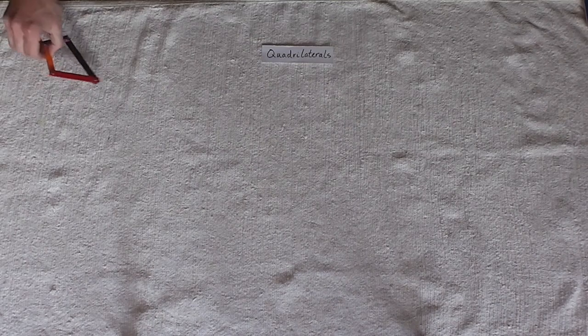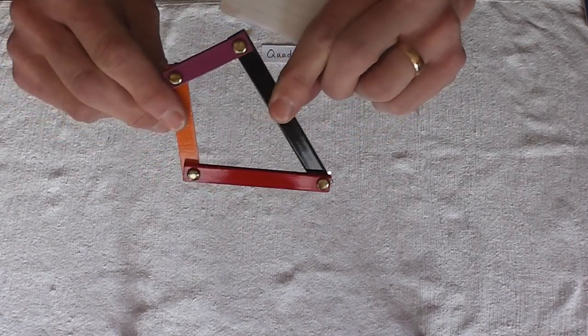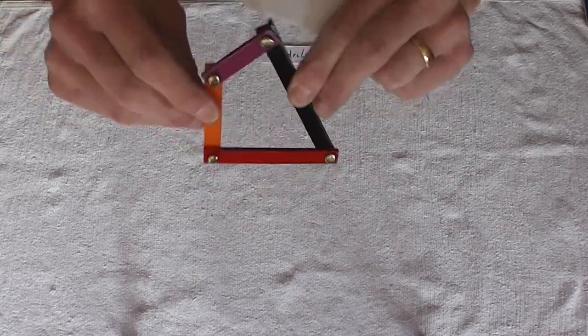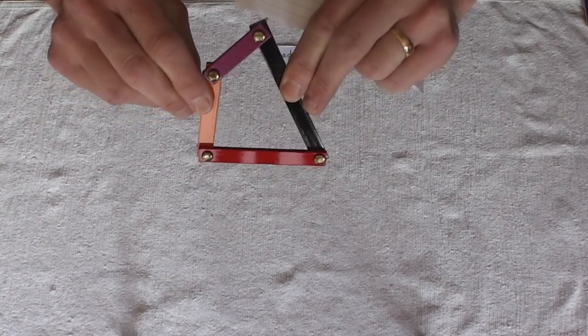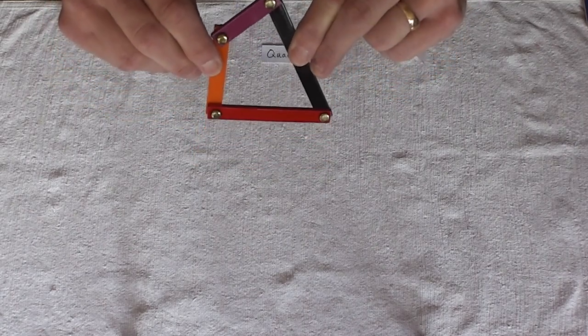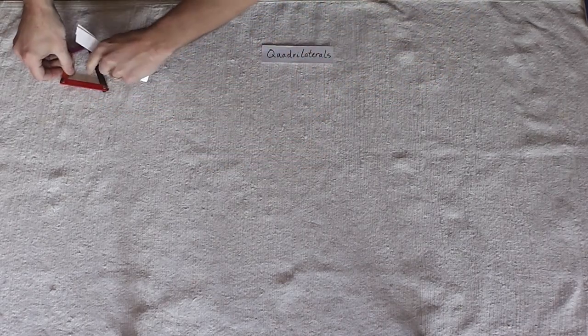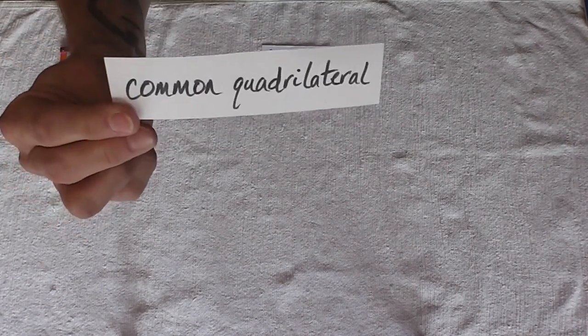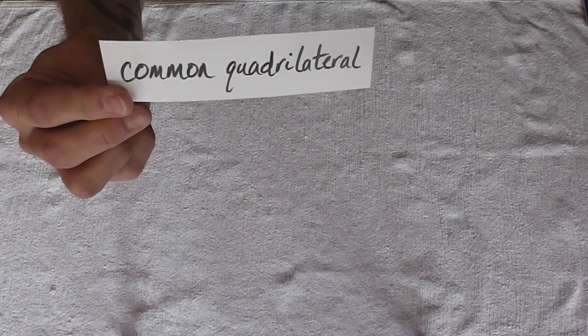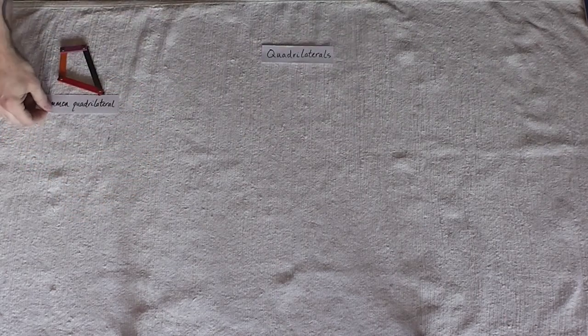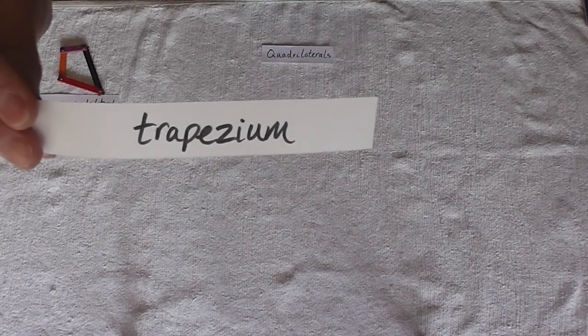We will start with this shape right here. You can see it's got four sides. You can move it if you want, but it's got four sides, and each side is a different length. You can tell there's different colors here. So those colors are a nice clue to help you. So we're just going to call this a common quadrilateral, or we could also call it a trapezium.